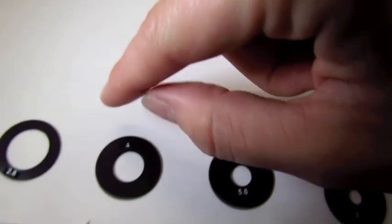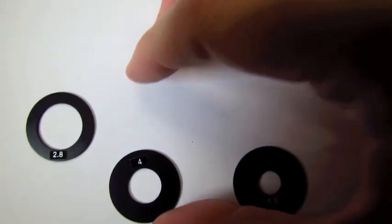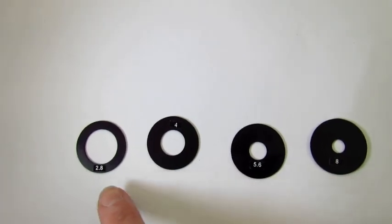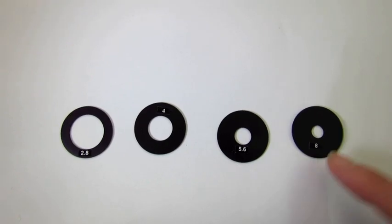But I just wanted to show you these as examples of aperture rings really. So there's the four sizes there, you've got the 2.8, 4, 5.6 and 8.